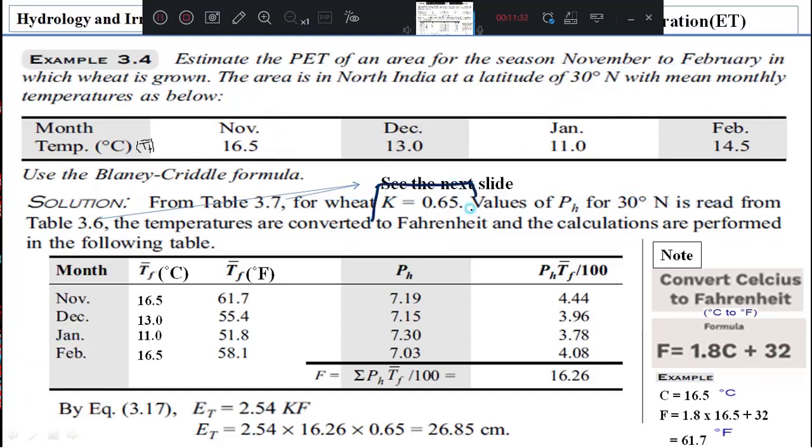See here. This is your K value I wrote. And pH value I will make a table here. The table you need to draw in the examination. November, December, January, February. And TF is given in the problem. 16.5, 13, 11, and 14.5.